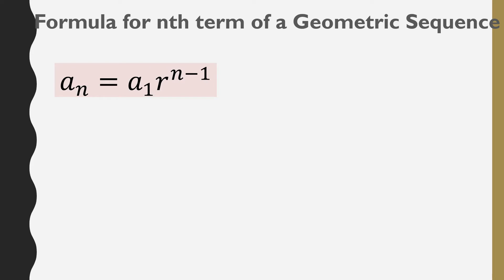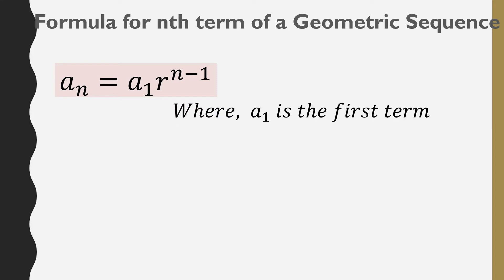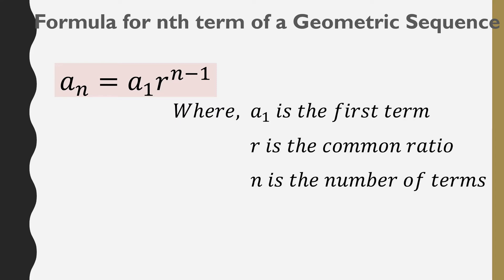The formula for the nth term of a geometric sequence is: a sub n is equal to a sub 1 times R raised to the power of n minus 1, where a sub 1 is the first term, R is the common ratio, n is the number of terms, and a sub n is the nth term.